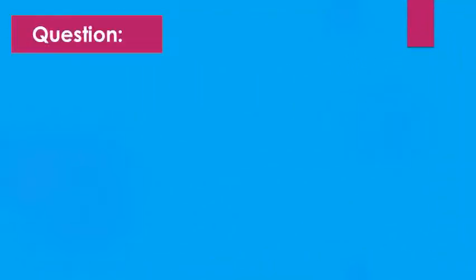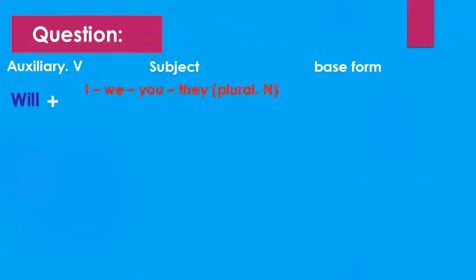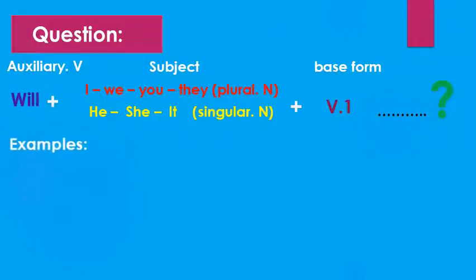And now question form. So here we have the auxiliary verb, then the subject, then the base form. So we have will plus I, we, you, they or he, she, it. We don't care about the subject if it is plural or singular, plus verb one. And here we add the question mark. So here we have examples.